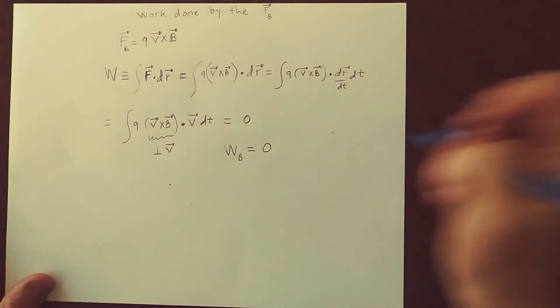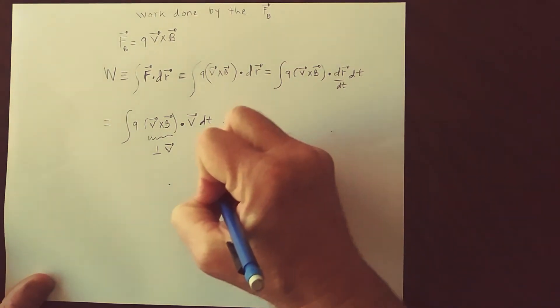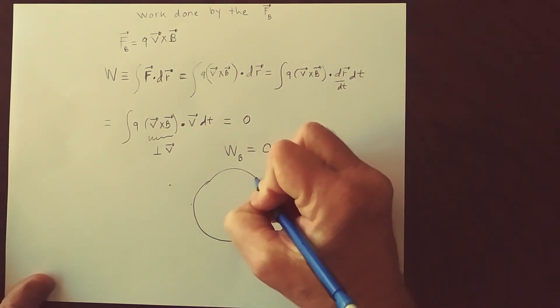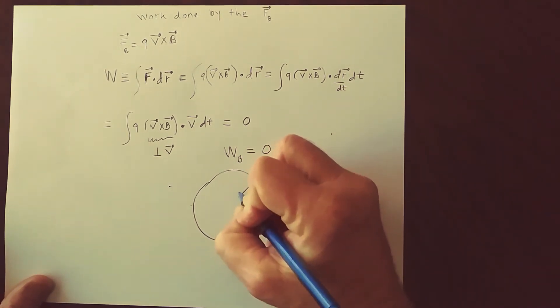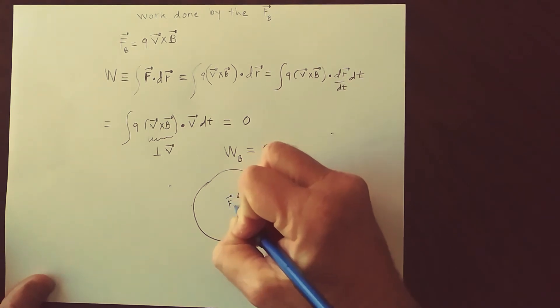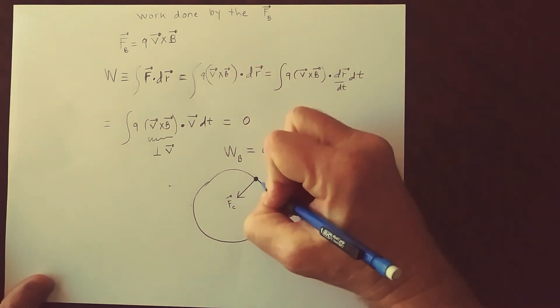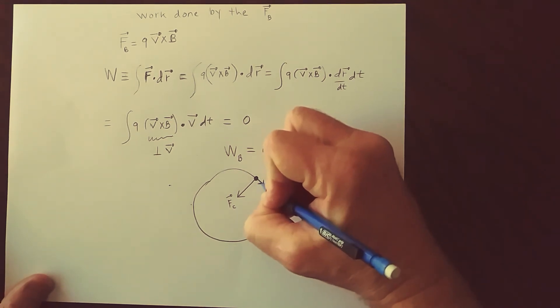But these are the conditions for circular motion. An object that travels on a circle experiences a force toward the center, where we call it the centripetal force, Fc, while the motion is tangent to the circle.